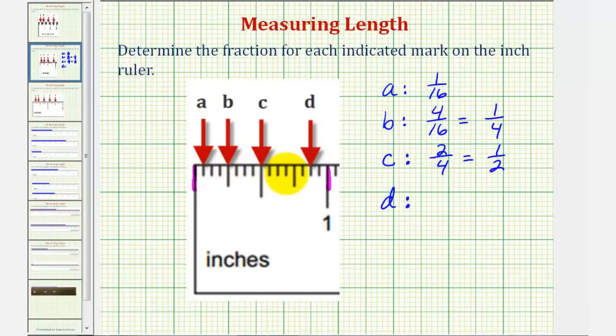six, seven, eight, nine, ten, eleven, twelve, thirteen, fourteen sixteenths would be the fraction for D, but it's not in simplest form, because we can express this using larger partitions.